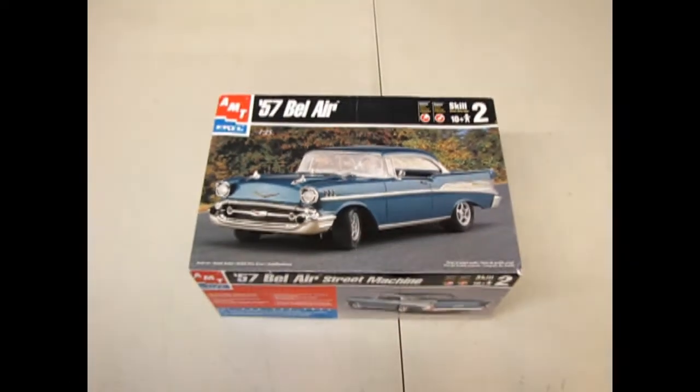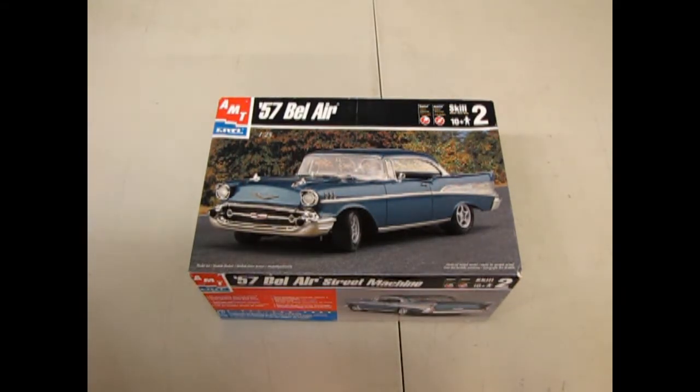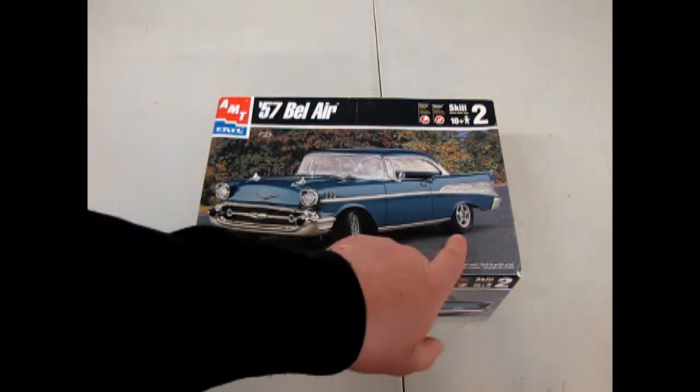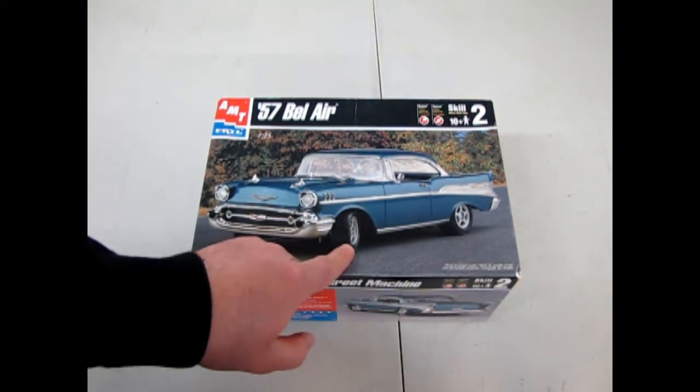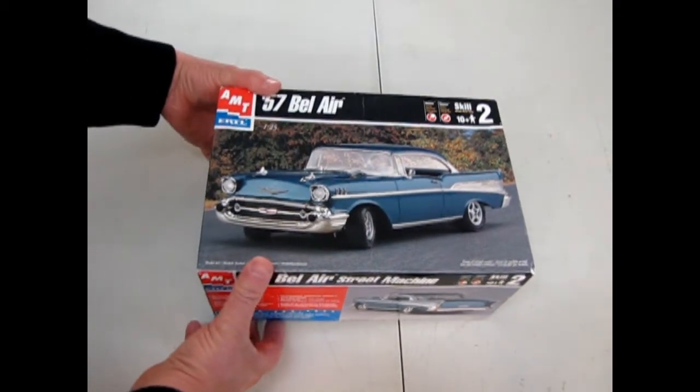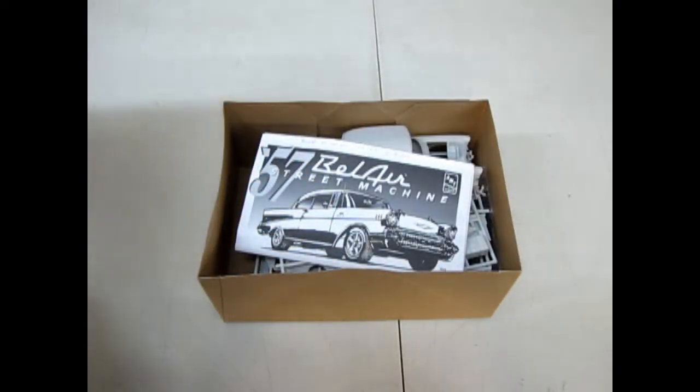Alright, here we've got our 1957 Chevrolet Bel Air Street Machine kit by AMT Ertl from 1998 and as you can see it's got many of the 1998 features like these Camaro style wheels and now let's open up the box on this baby and check it out.